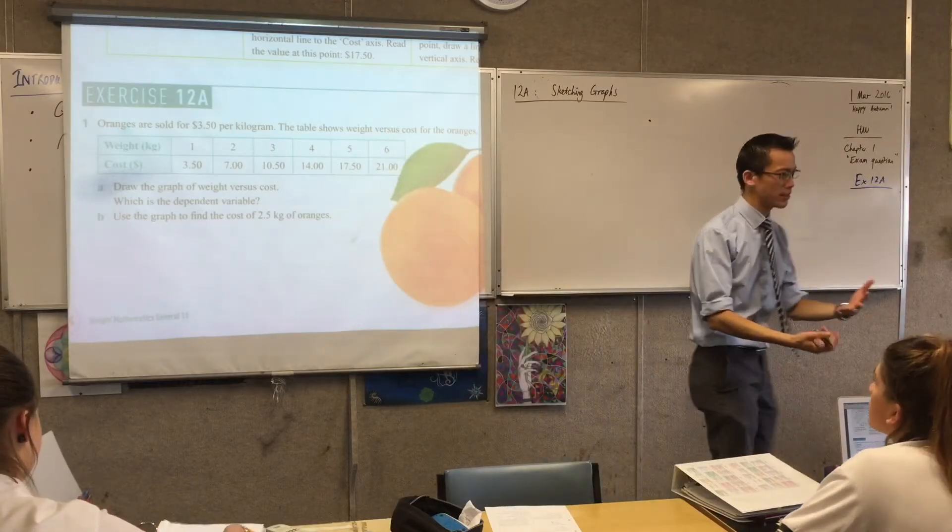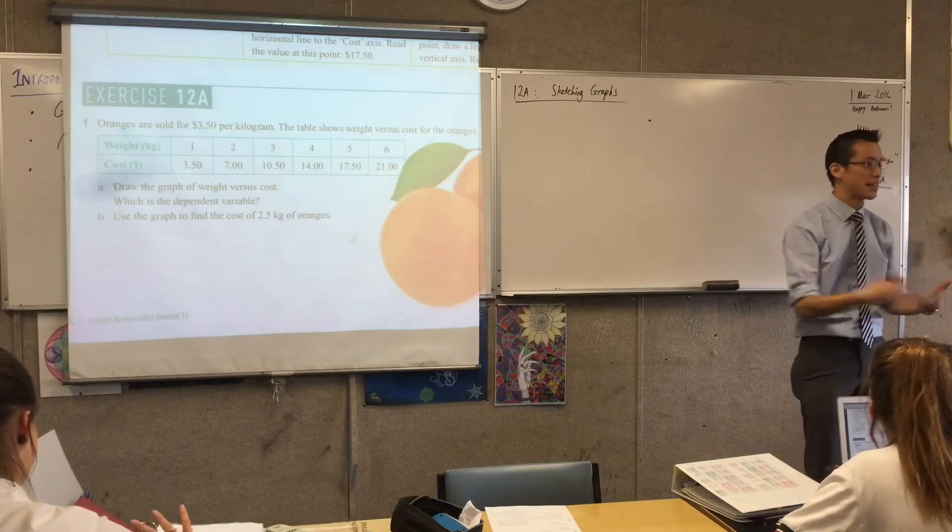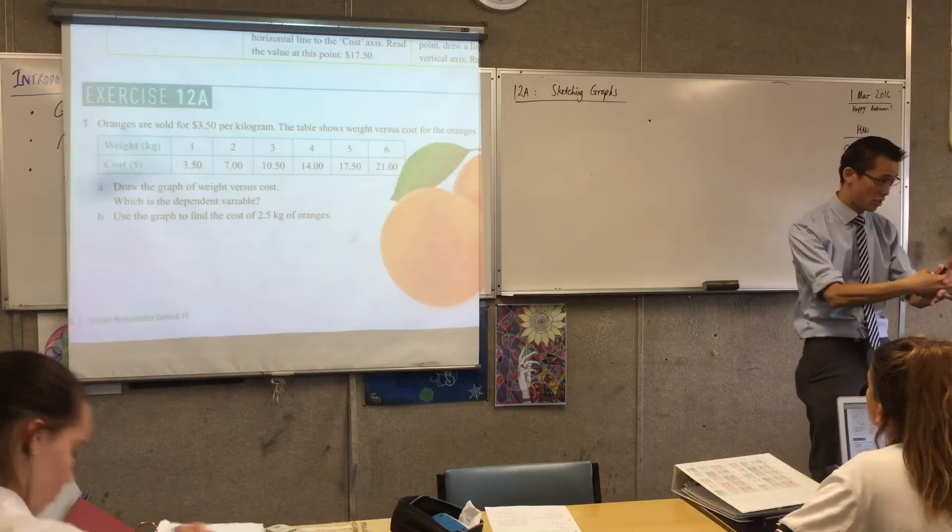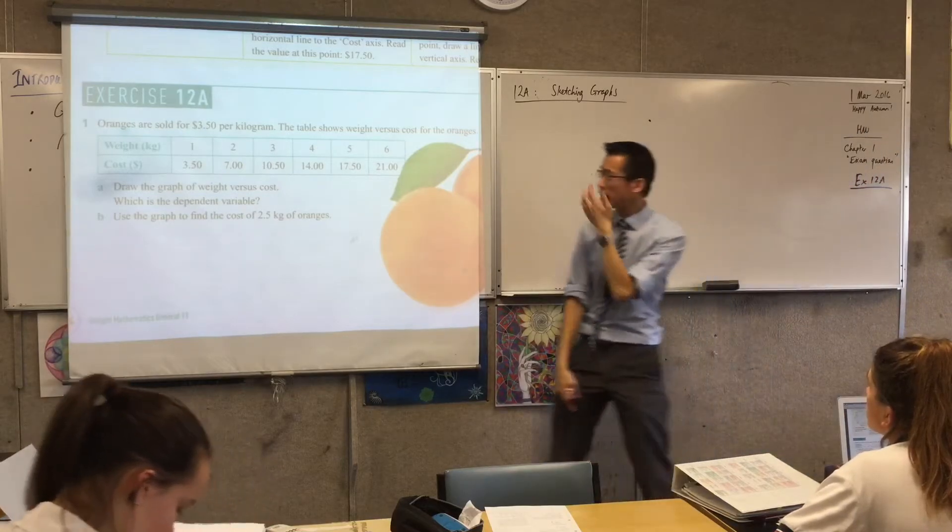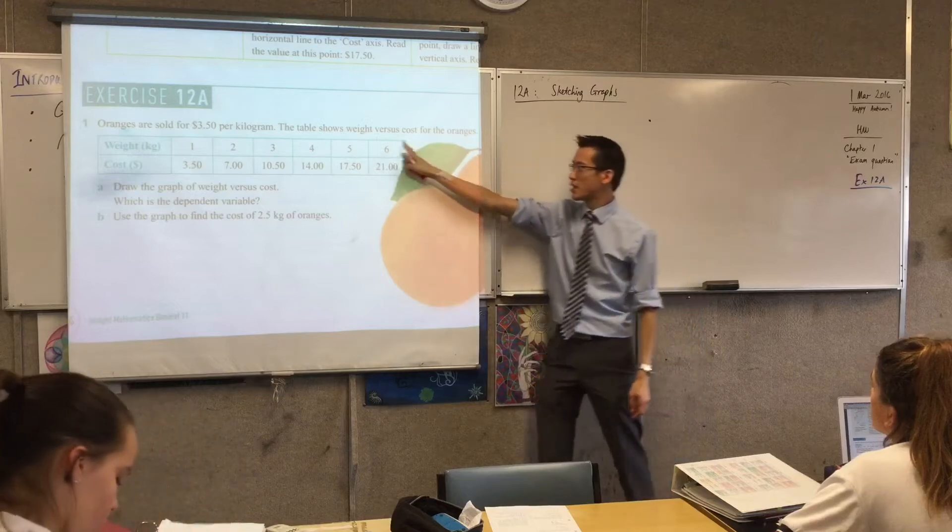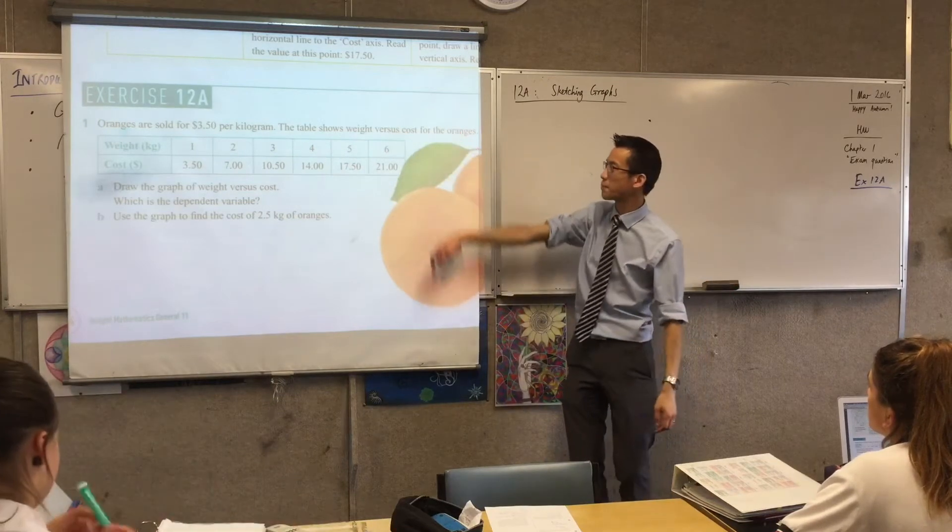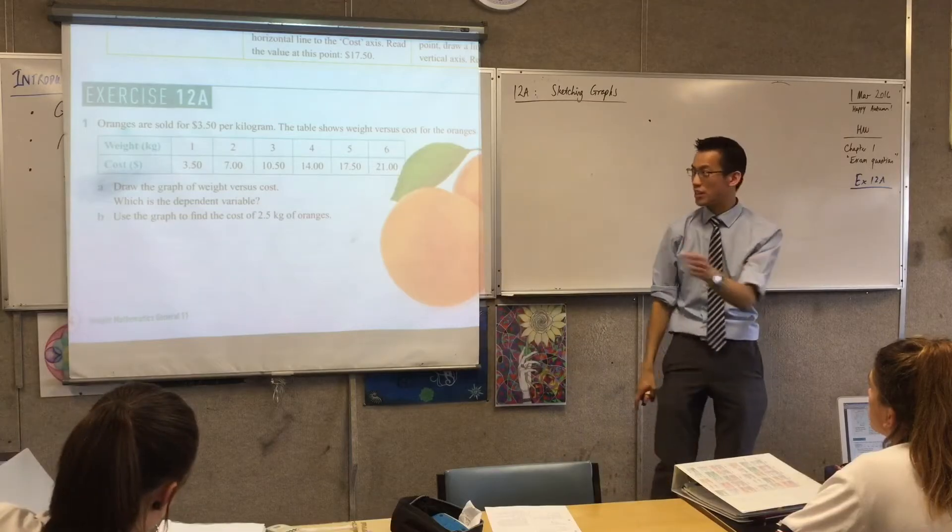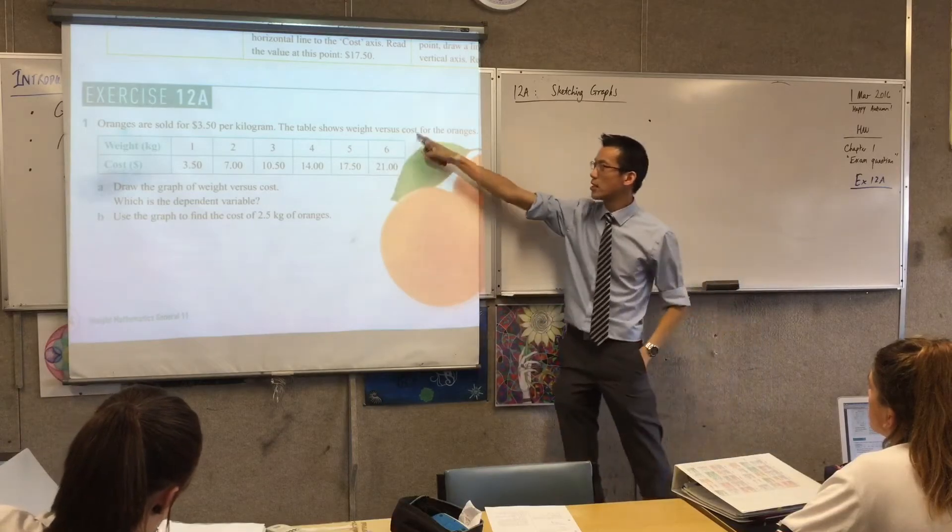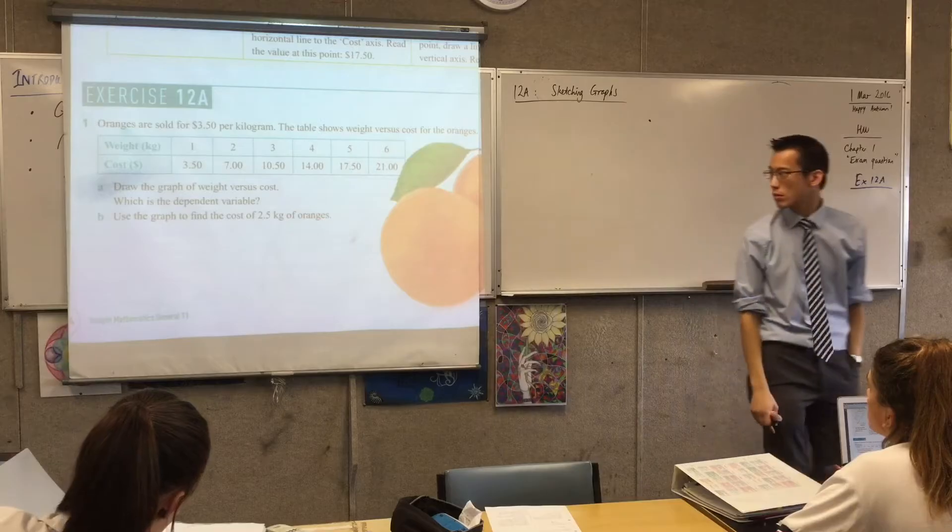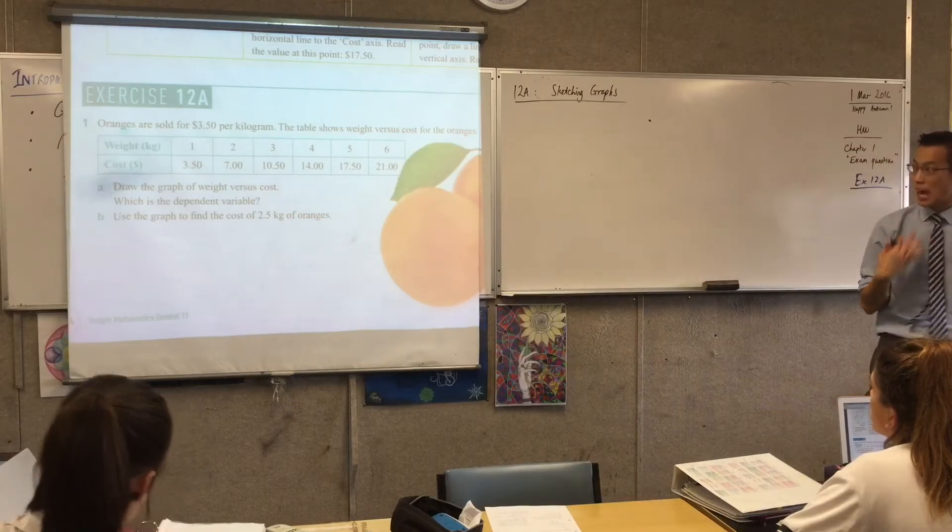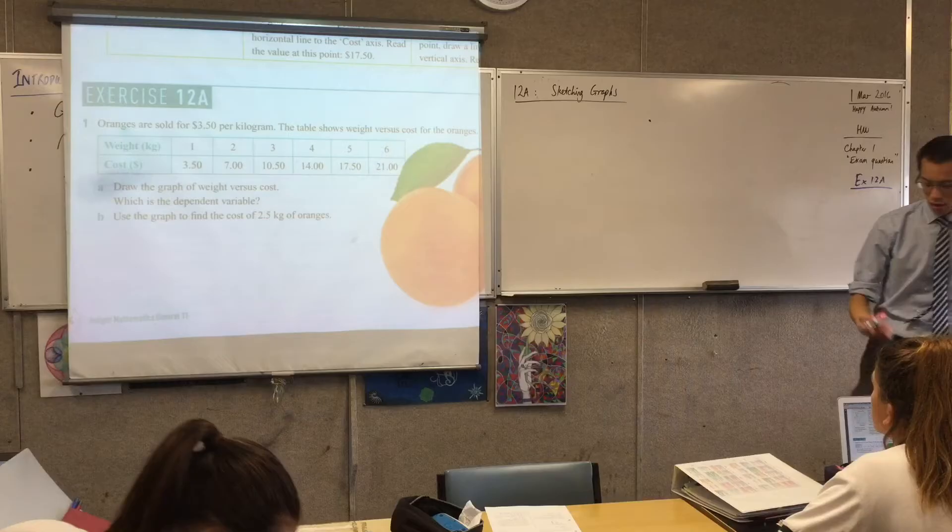These are the two quantities that are related to each other. That's why these are called linear relationships. We're always going to be looking at something versus something else. Something and its value depends on something that's similar to it or related. So the two values we're interested in here are weight versus cost. They ask us, can you draw the graph of weight versus cost?